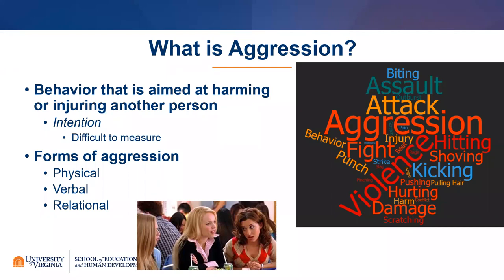So these are three types or forms of aggression that we can observe. Even though all of those things can happen in someone's life and have a negative impact, and I think they're all very important to understand, today we're going to be focusing most closely on physical aggression — engaging in behaviors that are physically harmful to somebody else, such as hitting, biting, or shoving.